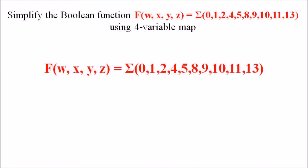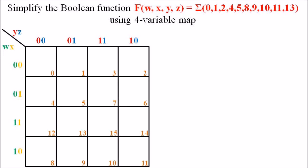Since the total number of variables is 4, we use a Kmap with 2⁴ = 16 cells, arranged with 4 rows and 4 columns. The rows represent variables w and x, and the columns represent variables y and z. Rows from top to bottom are: 00, 01, 11, 10. Columns from left to right are: 00, 01, 11, 10. Each cell has a subscript representing its minterm position.